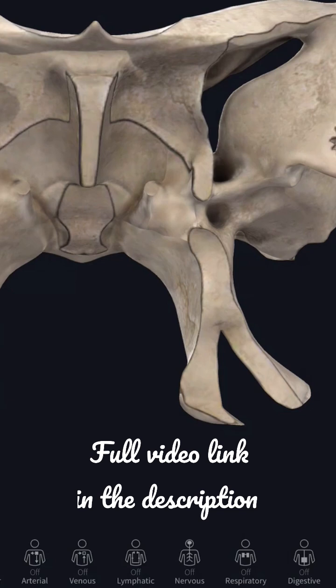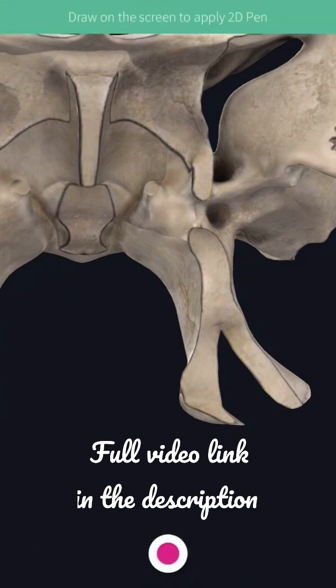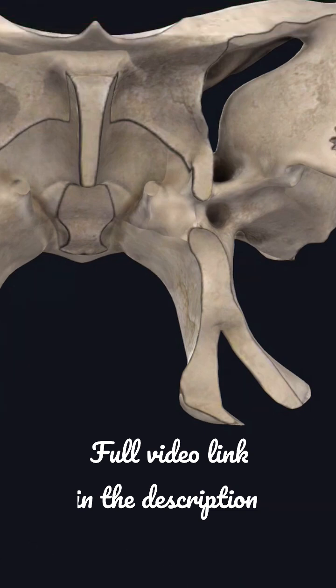Next we will see the inferior surface of the body of the sphenoid. The inferior surface of the body of the sphenoid shows this is the rostrum of the sphenoid.